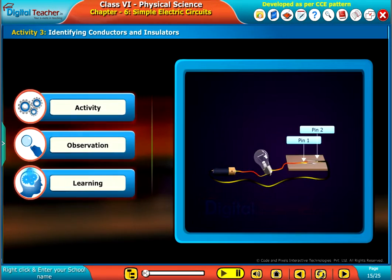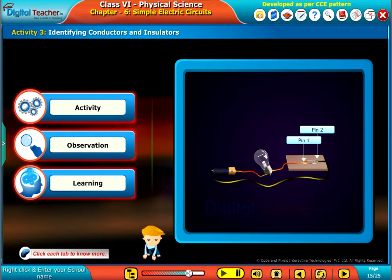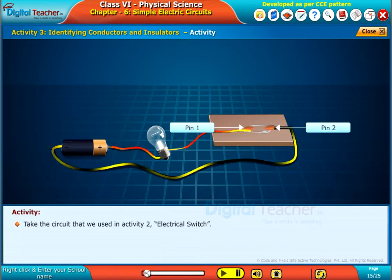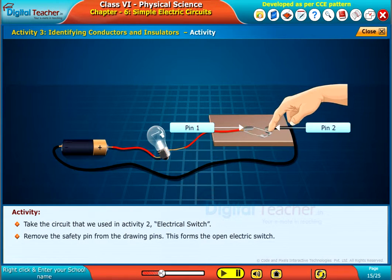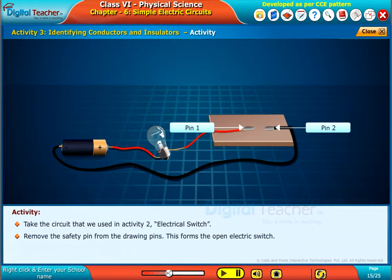Welcome to the chapter. Now let us do an activity to find which metals conduct electricity and which don't. Take the circuit that we used in Activity 2, Electrical Switch. Remove the safety pin from the drawing pins. This forms the open electric switch.